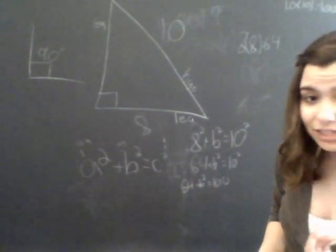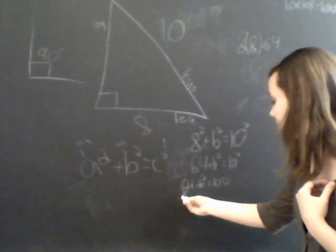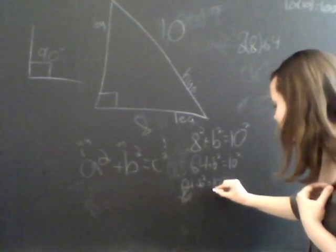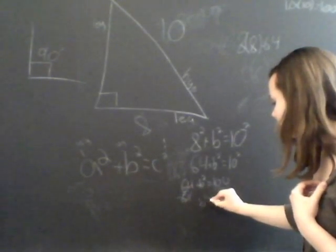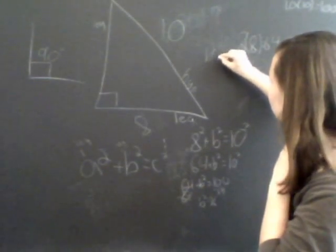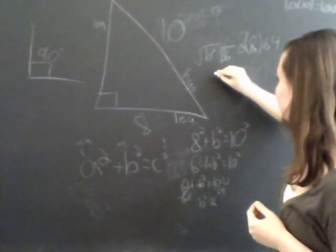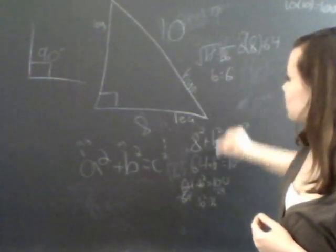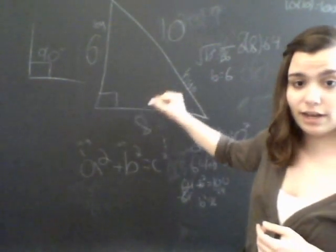But still, that doesn't give you your answer. So what you have to do is solve for B. You do this by isolating the variable. You subtract 64. You subtract 64 from both sides to get the B squared alone. So that ends up being B squared equals 36. And then you're back where you were with the last problem. B squared equals 36. You have square root 36 and square root B. And you get B equals 6. So the lengths of the triangle are 6, 8, and 10.